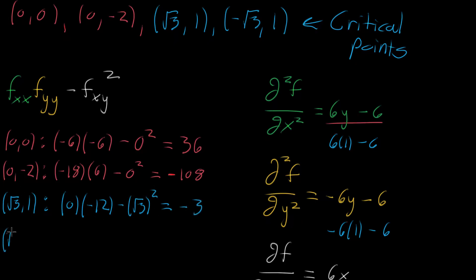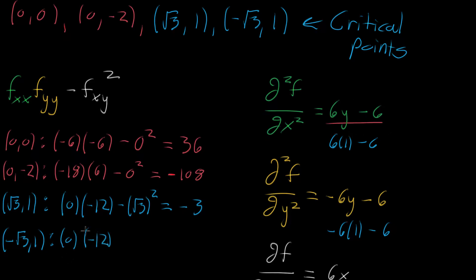At the point (-√3, 1): this will be very similar. The first term f_xx again has only y, and with y = 1 it's also zero, for the same reasons. And for f_yy the value of y didn't change, so that's also negative 12. Now plugging in x = -√3 for the mixed partial, that's the same square, so again we're subtracting off three. The result is negative three.